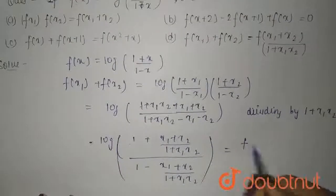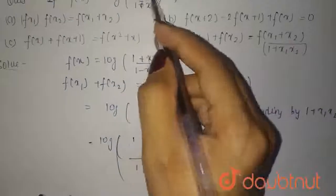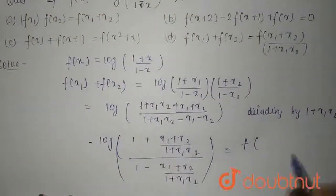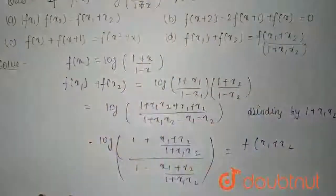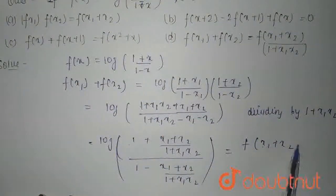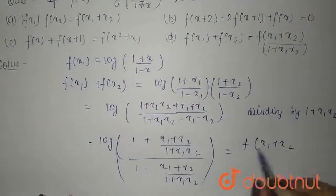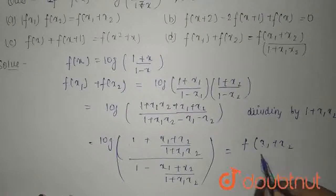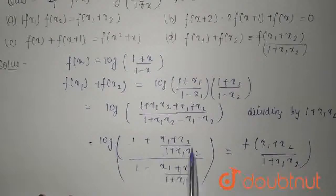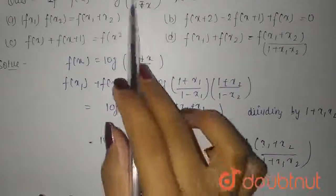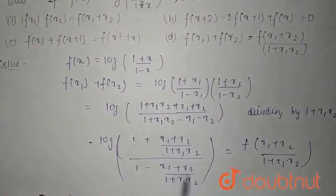Now, this is f of nothing but 1 plus x, that is x1 plus x2, that is f of x1 plus x2 upon 1 plus x1 x2. That is you put in the place of x, that is 1 plus x and 1 minus x.